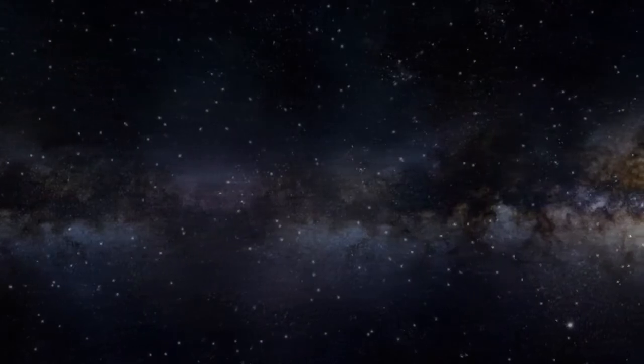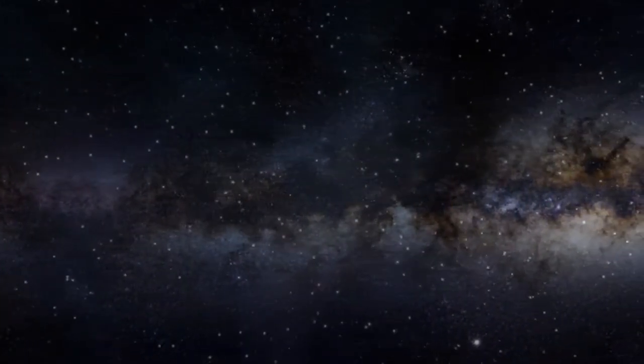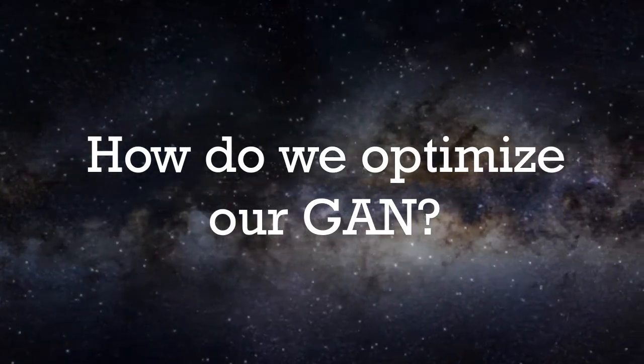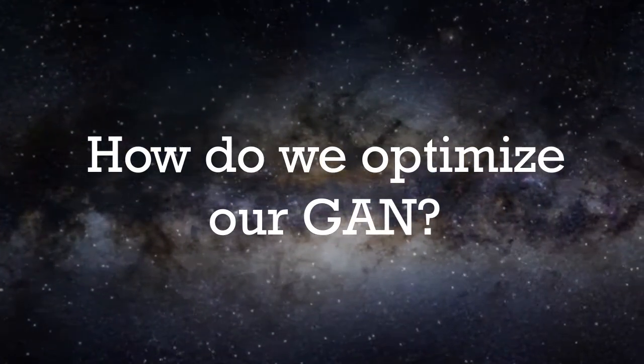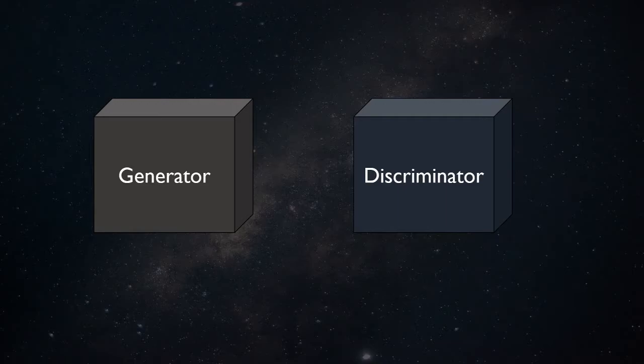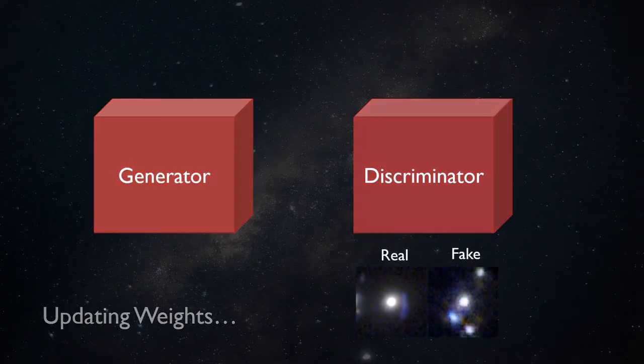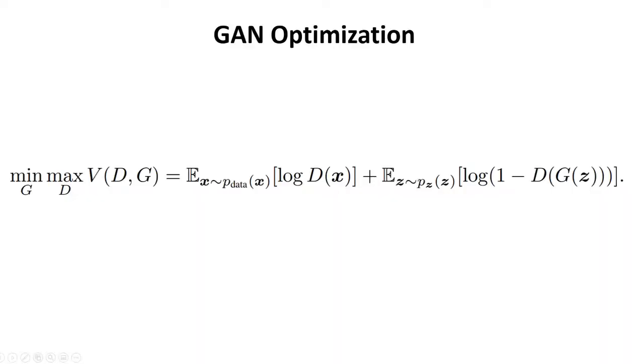Hey everyone, welcome back to the summer pi series. In this video we're going to discuss how to optimize a generative adversarial network. As we went over in the last video, these networks are composed of two different neural networks, so how do you optimize this? It's not as intuitive as it was before.